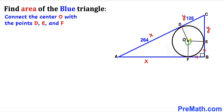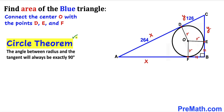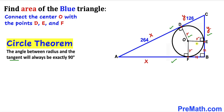Connecting center O with the points of tangency D, E, and F, we can see these are all radii of the circle. Let's call the radius lowercase r. By the circle theorem, the angle between a radius and a tangent is always 90 degrees, so all these angles are 90 degrees each.